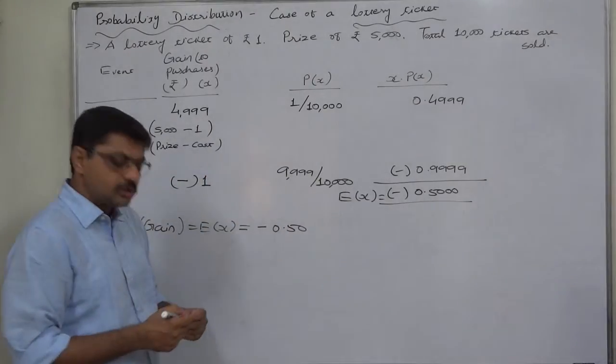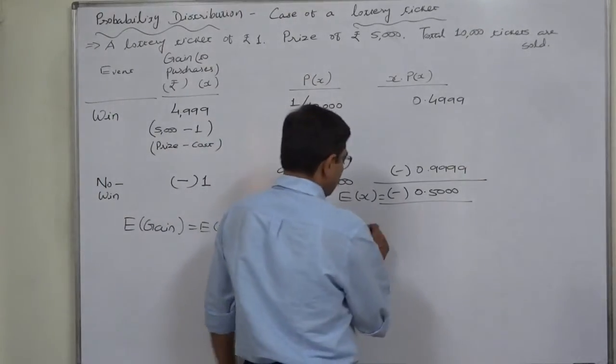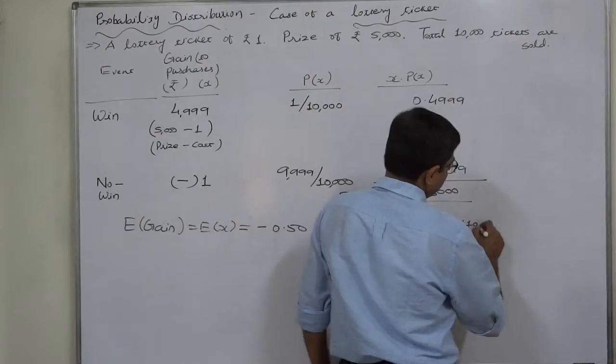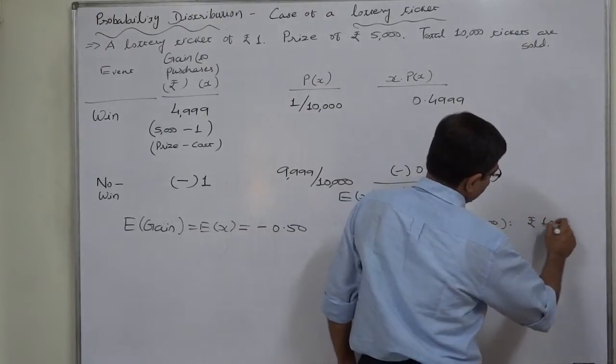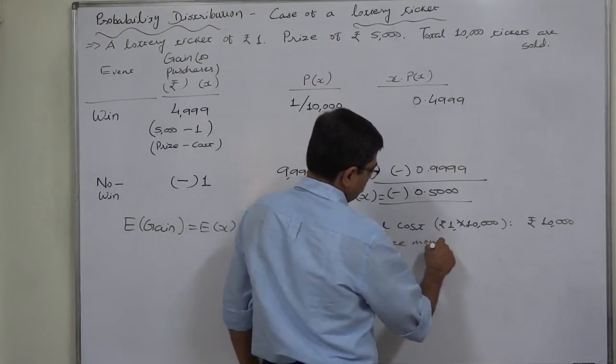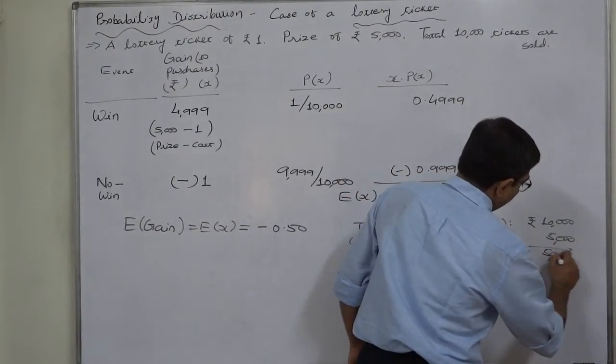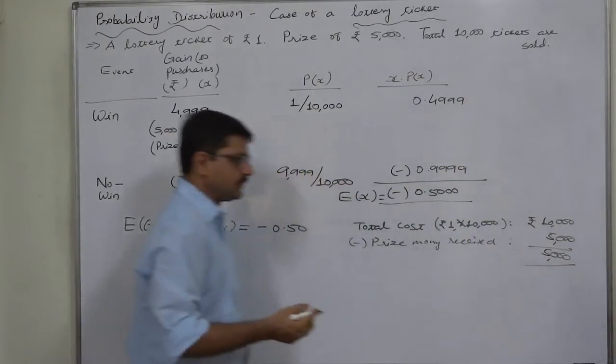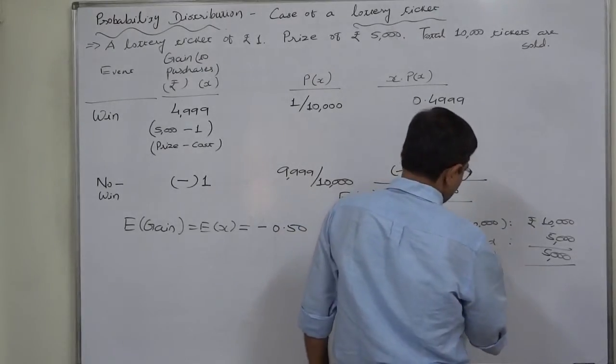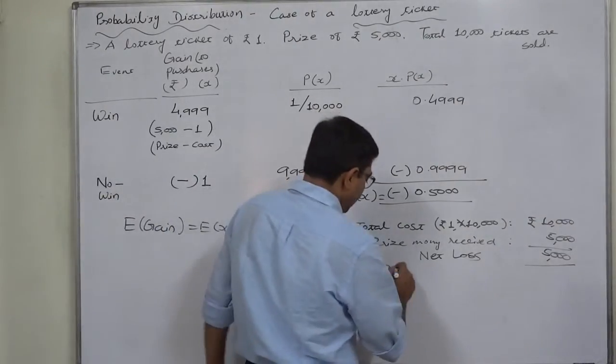Now let us reconcile. Suppose that all the 10,000 tickets are bought by a person. So total cost will be rupee 1 into 10,000 tickets, so it will be rupees 10,000. Again, he will receive prize money rupees 5,000. So at the cost of 10,000 rupees, he bought 10,000 tickets, but he received only 5,000 as prize money. So his net loss comes to rupees 5,000 on 10,000 tickets.